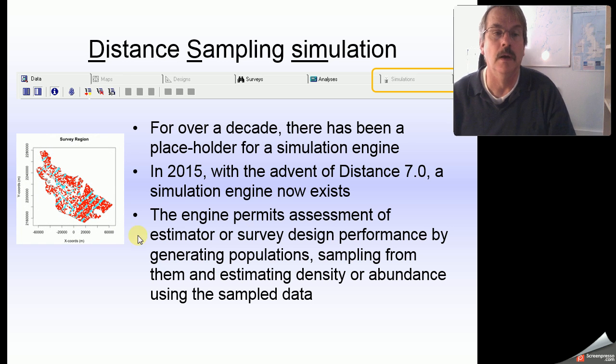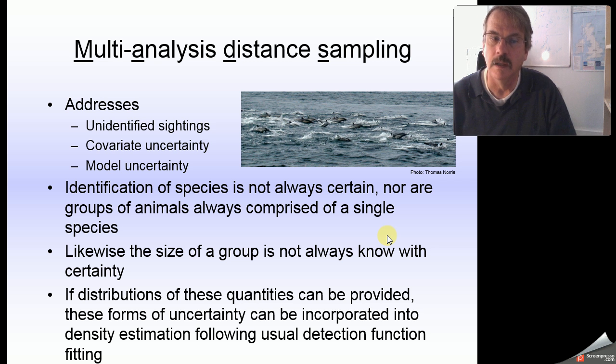There's an example of a study area with a complex shape with survey effort placed across that study area with animals that are either not detected in red or detected in blue that can arise through the use of this distance sampling simulation engine. The other thing I'll mention to you is the existence of a multi-analysis distance sampling engine that's just also appeared in distance seven and it addresses things like unidentified sightings and uncertainty associated with measured covariates or fitted models.